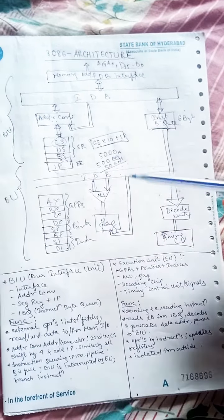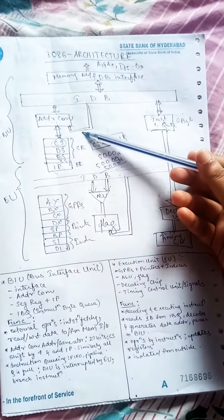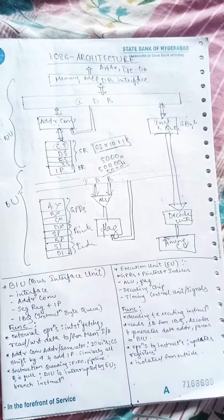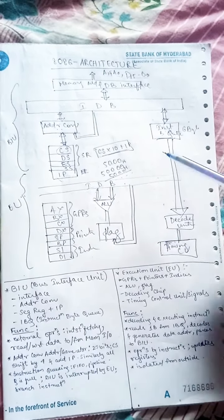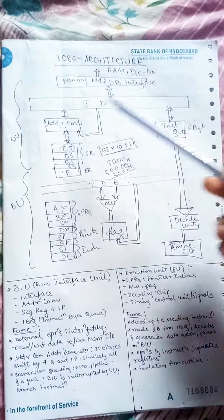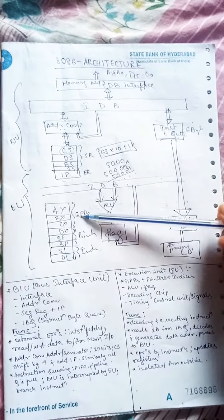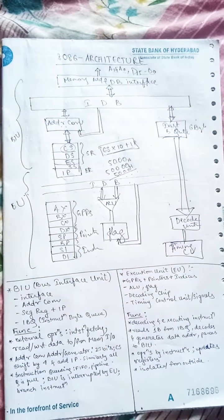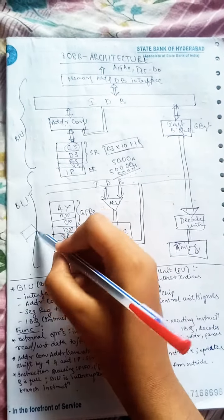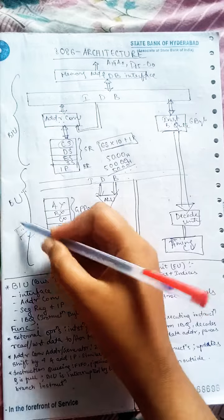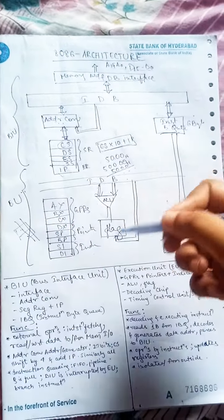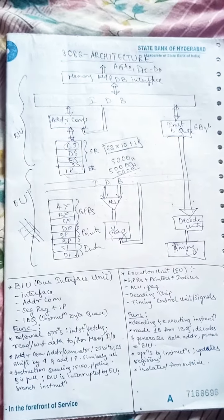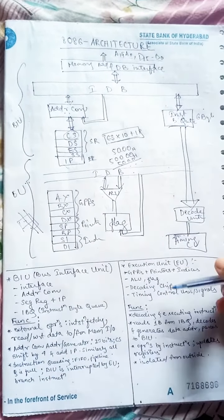So as for which these two independent units are speeding up the execution time, speeding up the execution process, for which these two independent structures are there. And this process is known as pipelining. In pipelining there are two different parts, independent parts, and they can run parallel simultaneously so that it can speed up the execution process.